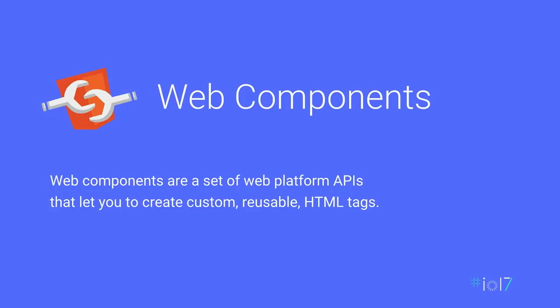When we talk about web components, we're talking about a new set of APIs landing in the browser that allow you to define your own custom HTML tags — components that will work in any context with any library or framework. The two big standards that make up web components are custom elements, which let you define your own custom HTML tag, and Shadow DOM, which lets you scope your CSS and encapsulate your markup inside those controls.